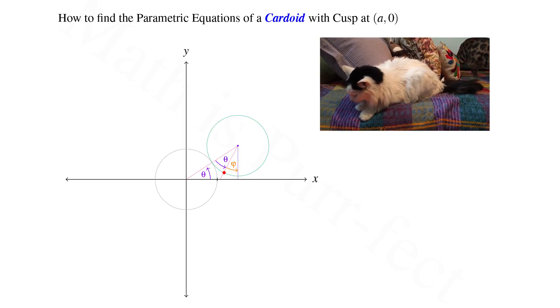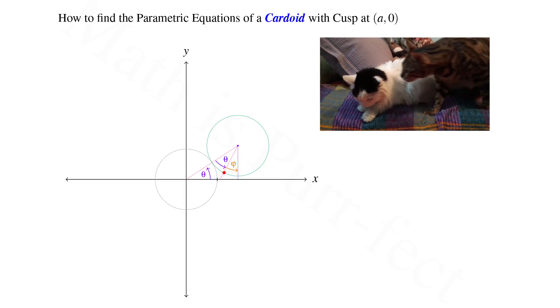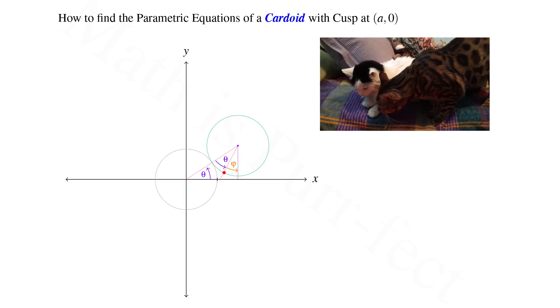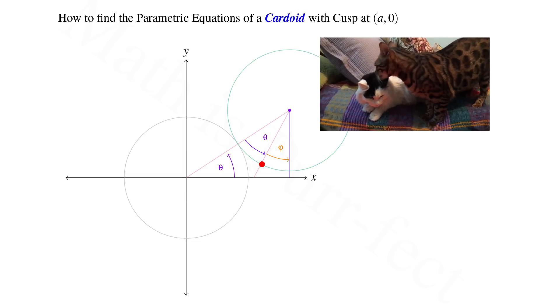If we drop a perpendicular to the x-axis from the center of the exterior circle, it creates an angle phi with the exterior edge of our triangle. Let's zoom in to get a closer look.